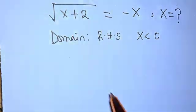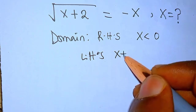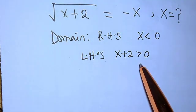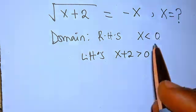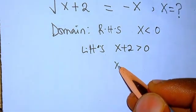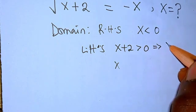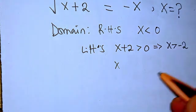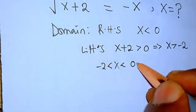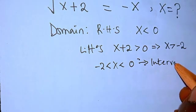Now let's look at the left hand side. For the left hand side, x plus 2 must be greater than zero — the expression inside the radical sign must be greater than zero before we can have a real solution. This gives us x plus 2 greater than zero, which implies x is greater than minus 2.